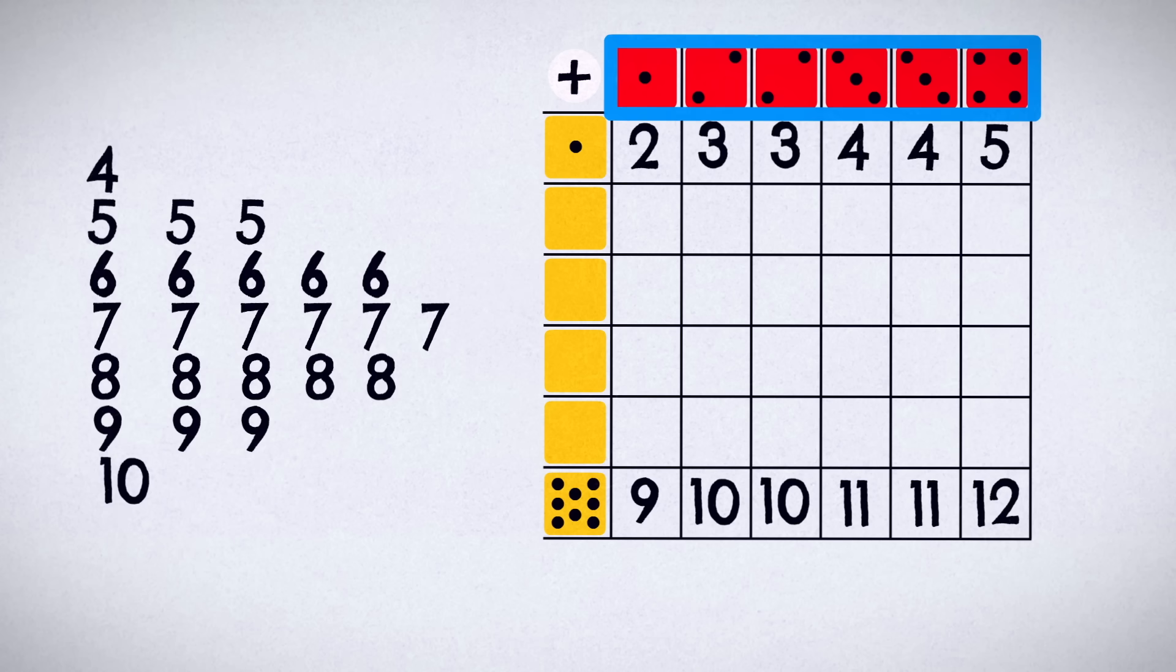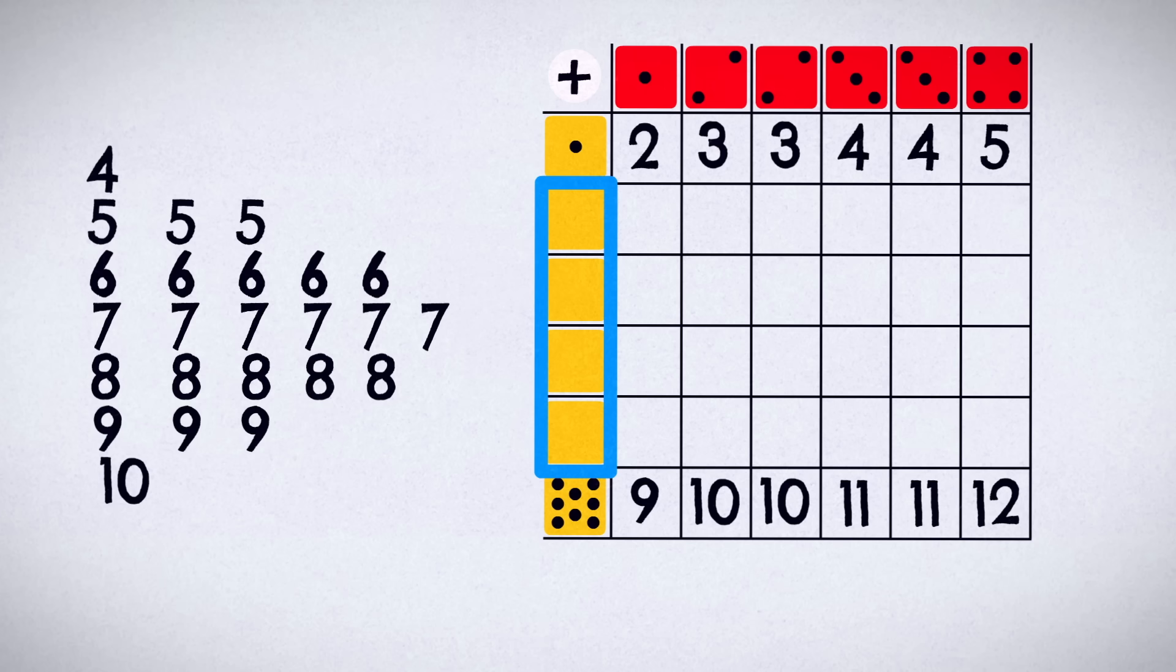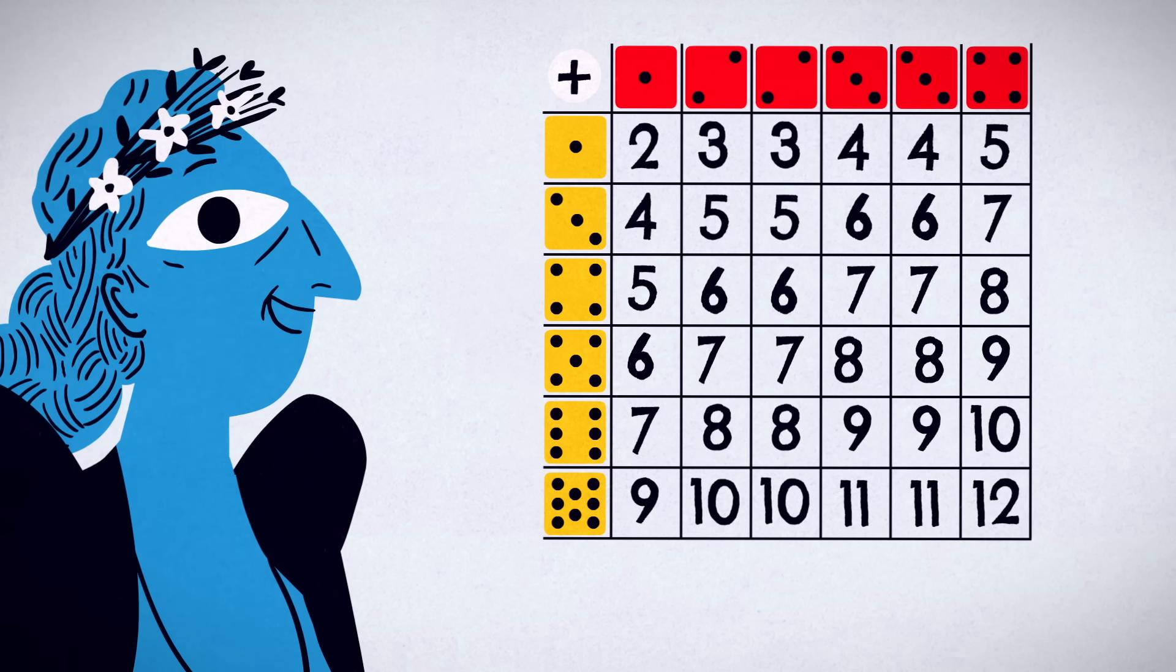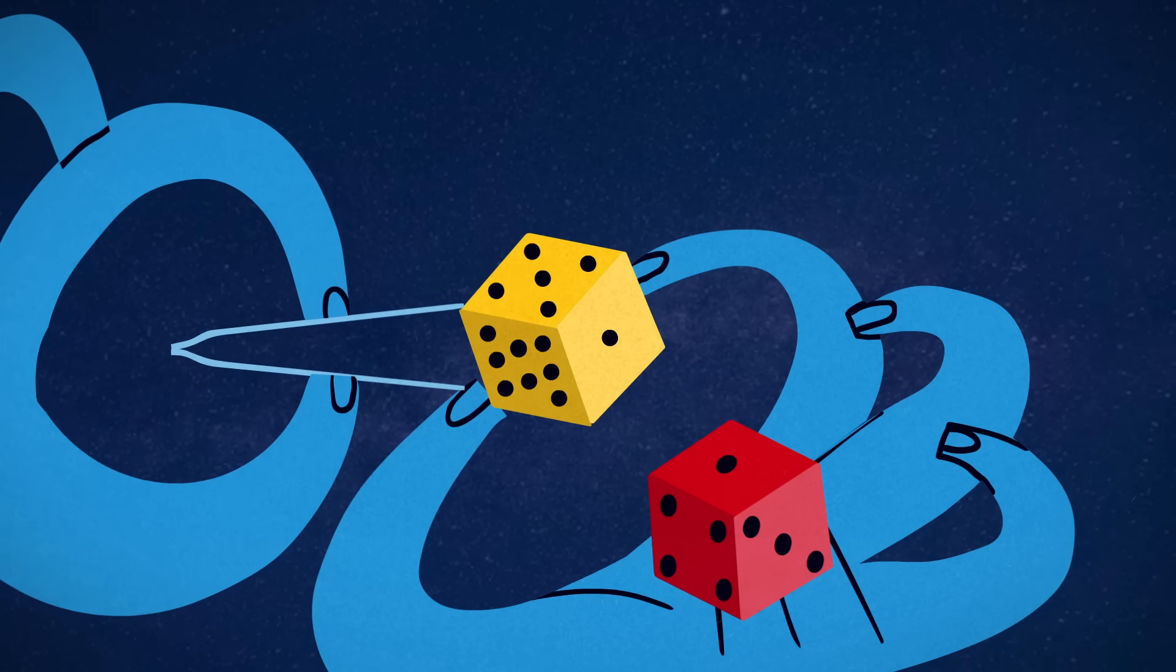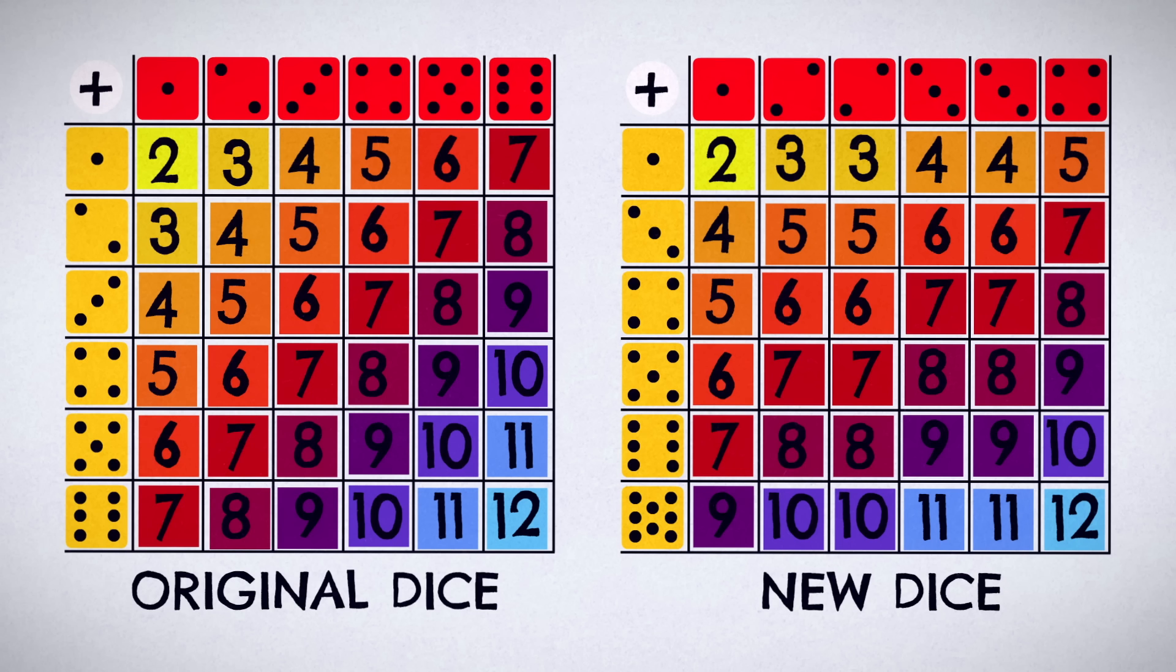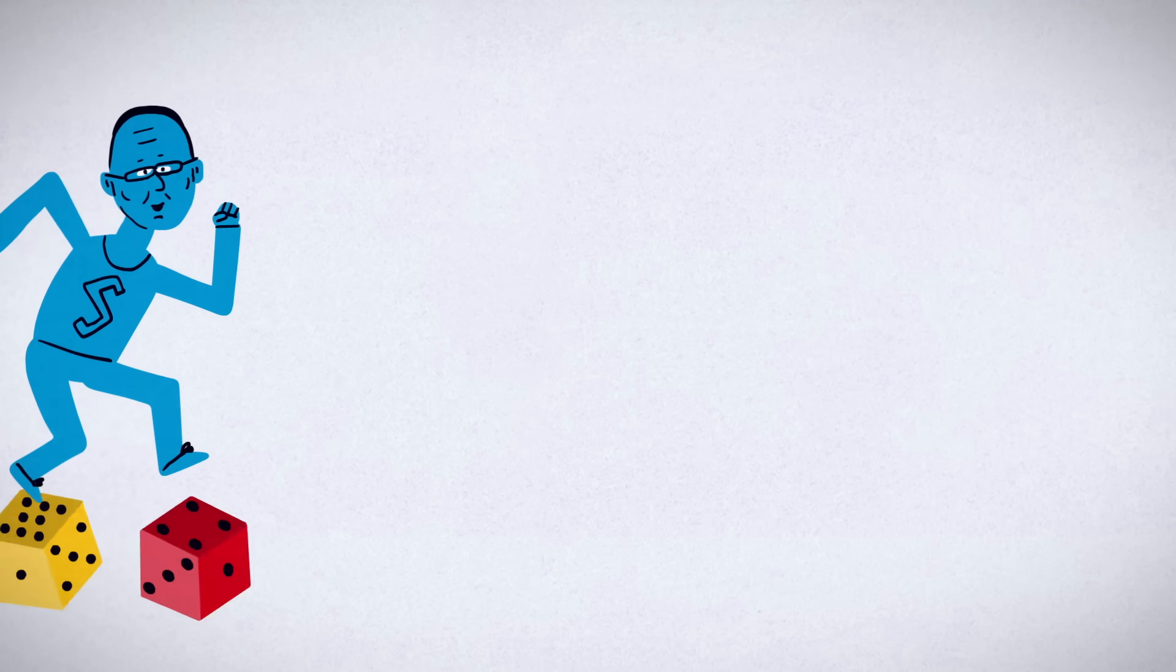With one die completed, we should be able to figure out the missing values on the second. First, we need one more way to make ten and four. So we must have one three and one six. We now need one more way to make five and nine. That forces us to choose four and five for the final sides. Fill them in, and lo and behold, we have a distribution table, where every possible sum shows up the same number of times as with our original dice.